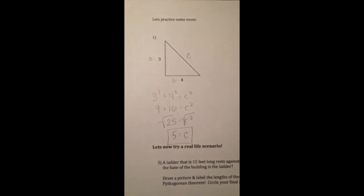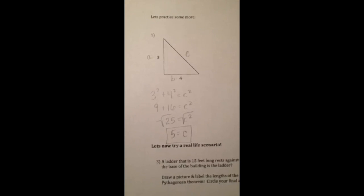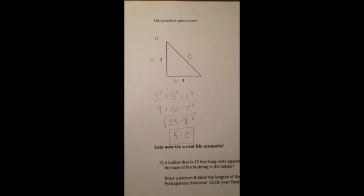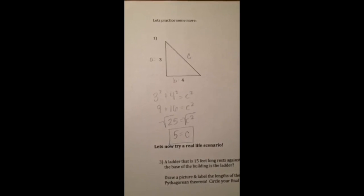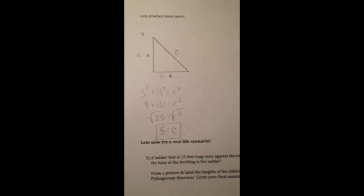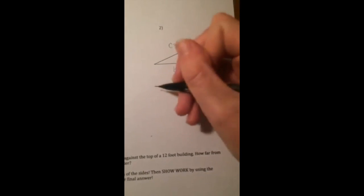If you tried the first practice problem and you solved for your hypotenuse, you should have gotten 5 as your C value. But the question is, what happens if you know what the hypotenuse length is and you're trying to find a leg? Let's try number 2.